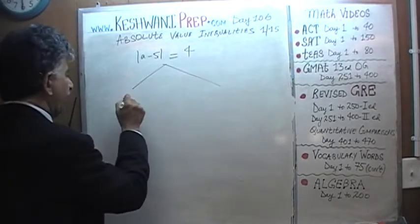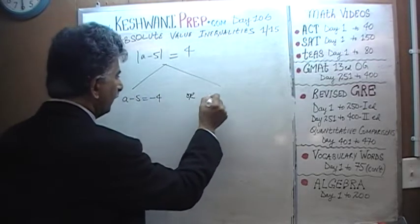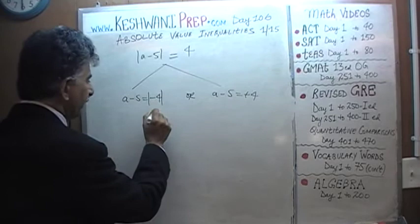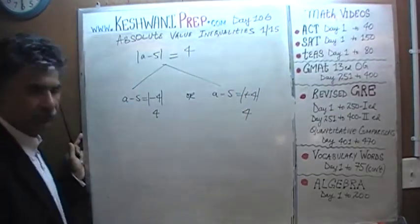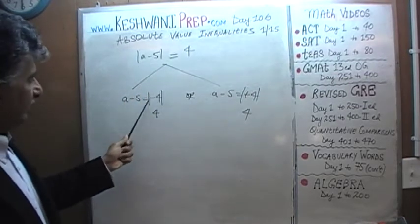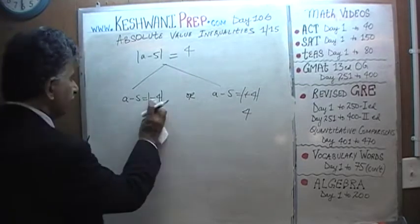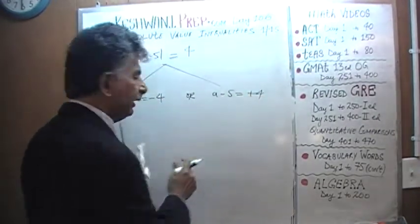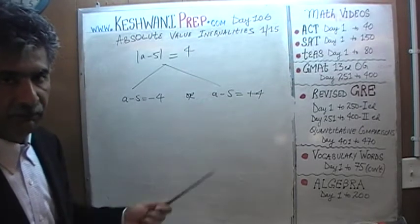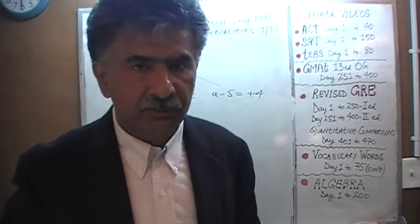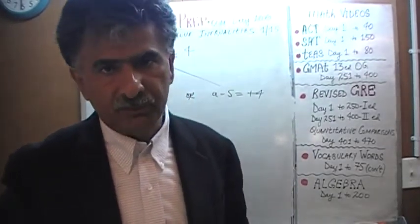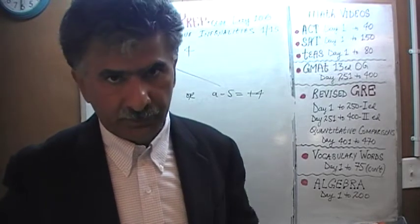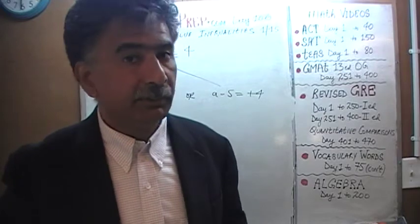What that means is that either A minus 5 has to equal negative 4, or A minus 5 has to equal positive 4. Because if it's negative 4, by the time we take the absolute value of it, it becomes 4. If it's positive 4, by the time we take the absolute value, it becomes 4. So if the absolute value of A minus 5 equals 4, then A minus 5 is either positive 4 or negative 4. When dealing with equality, it's either the positive value or the negative value.